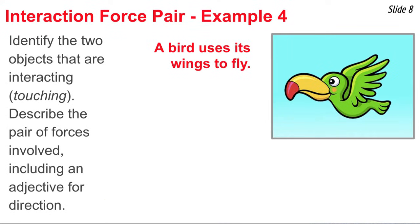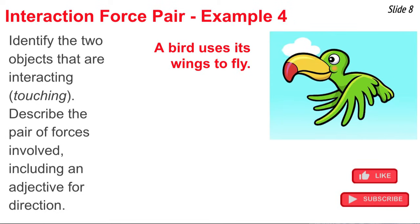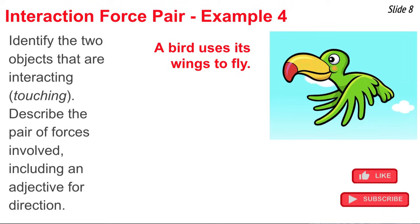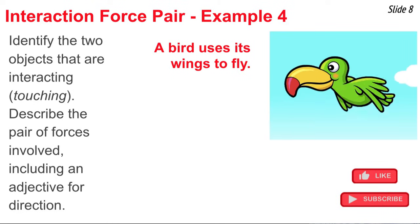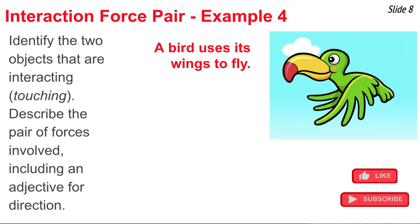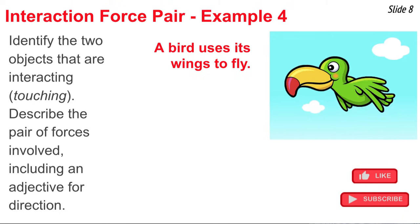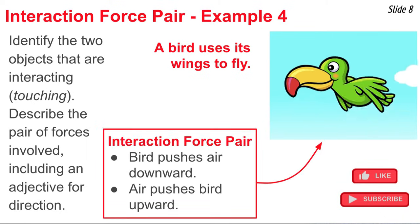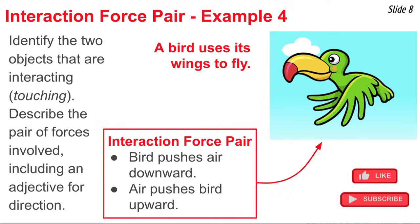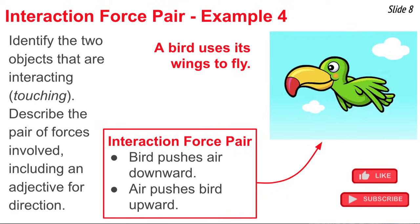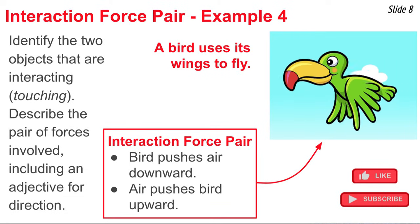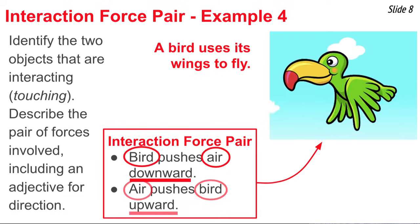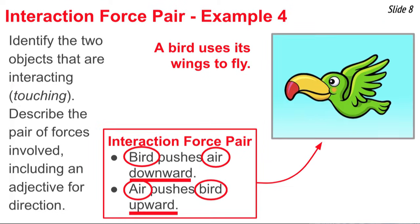In example four, we're going to look at flight. You probably never thought much about how a bird flies, but it has something to do with those wings and the flapping of those wings. As the bird flaps its wings, it pushes air downwards, and the result of pushing the air downwards is the air simultaneously pushes the bird upwards. So the two objects in the force pair are the bird and the air — the bird is pushing the air downwards and the air is pushing the bird upwards.